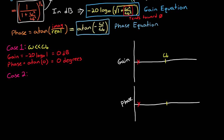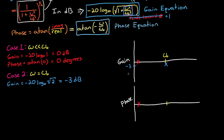The second case is when ω equals the break frequency ω₀. Then ω²/ω₀² equals 1, so the expression becomes the square root of 2. The gain is −20 log₁₀(√2), which equals −3 dB, and we can mark that point just below the break frequency on the gain plot. For phase, arctangent of (−ω/ω₀) with those equal gives arctangent of −1, which is −45 degrees.